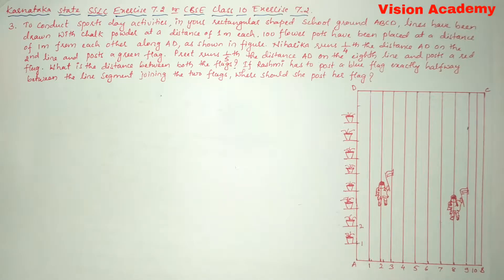Q3. To conduct sports day activities in your rectangular shaped school ground ABCD, lines have been drawn with chalk powder at a distance of 1 meter each. Hundred flower pots have been placed at a distance of 1 meter from each other along AD as shown in figure.